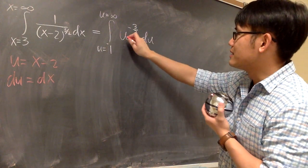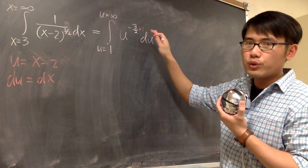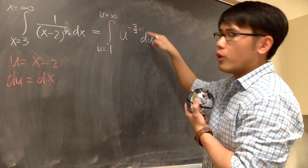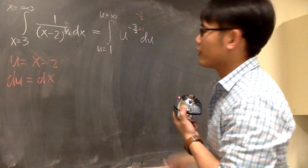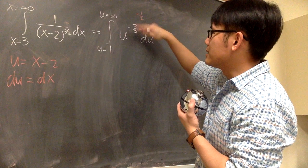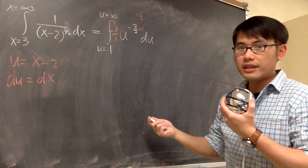This is u to some power. We're going to use the power rule backwards. Let me first add 1 to the exponent. This is negative 3 half plus 2 over 2. We get negative 1 over 2 for the new exponent. Then we divide by this new exponent, which is the same as multiply by negative 2 over 1.